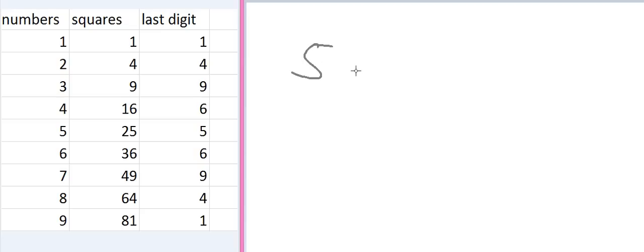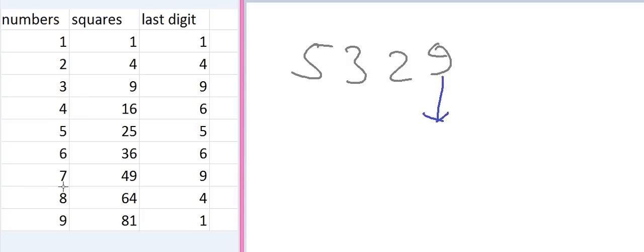Let's take a bigger number: 5329. First, look at the ones digit, which is 9. Checking the last-digit list, 9 appears corresponding to both 3 and 7. So we have a choice here — the first digit could be either 7 or 3.